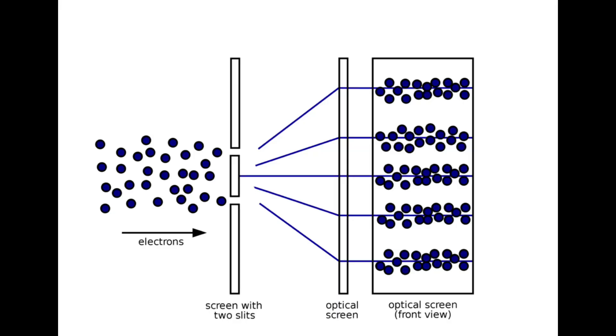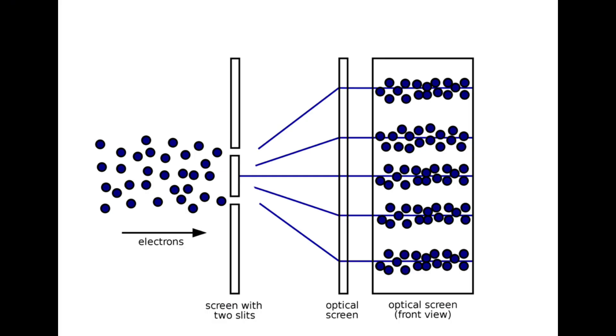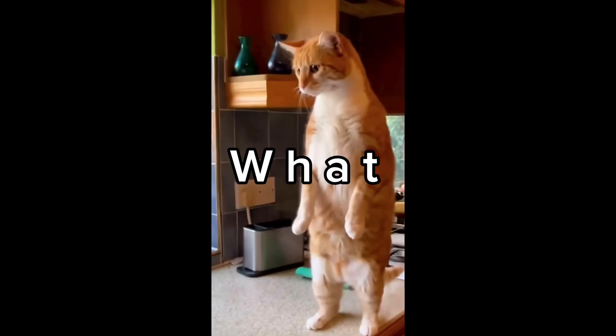It went like this. Particles were shot through two slits onto a surface on the other side, creating two lines of feedback from the particles. When photons and electrons were shot through these slits, however, five columns ended up on the surface as feedback on the other side. How is this possible?